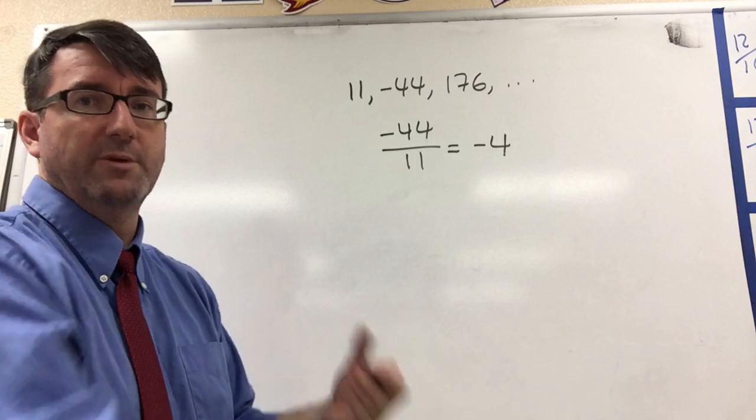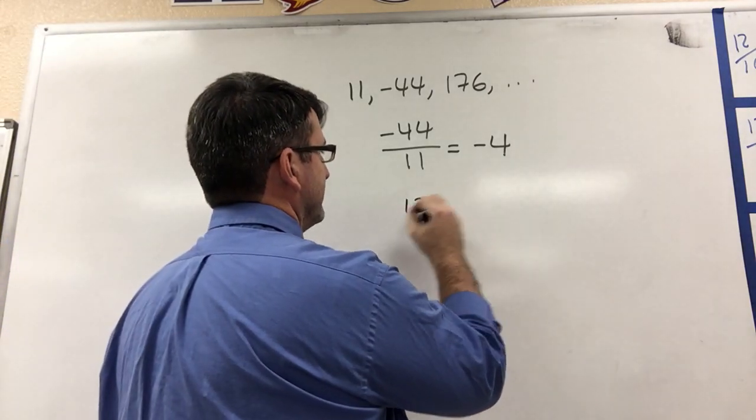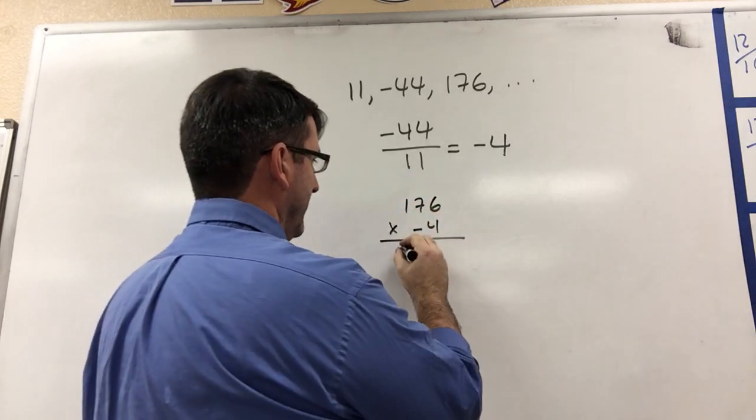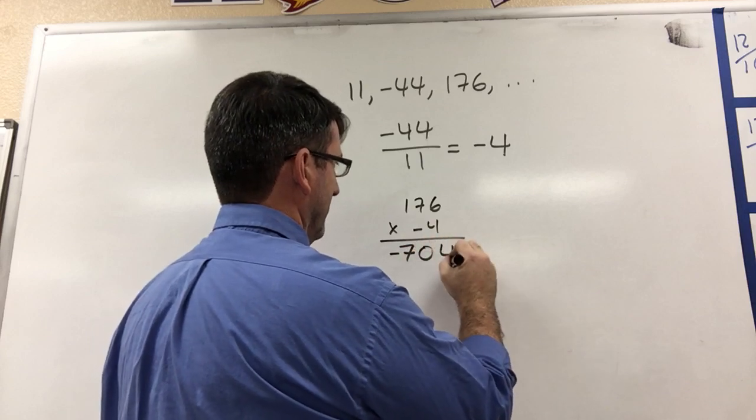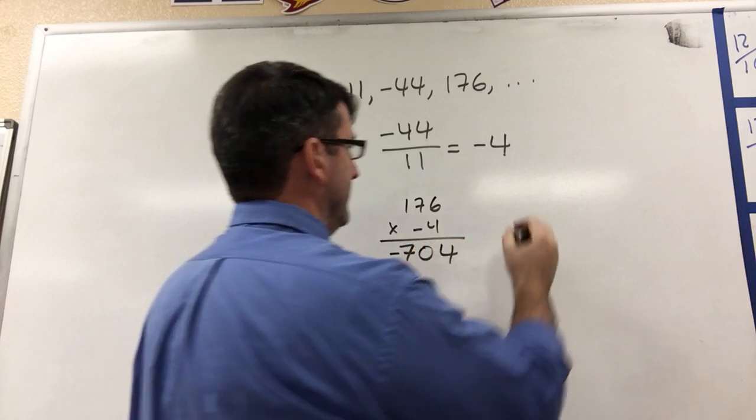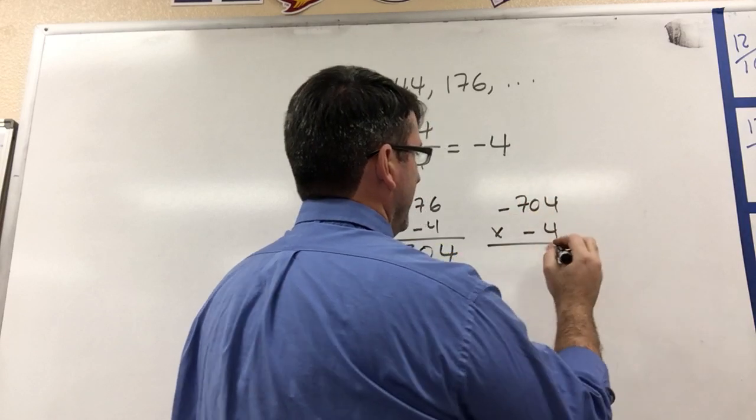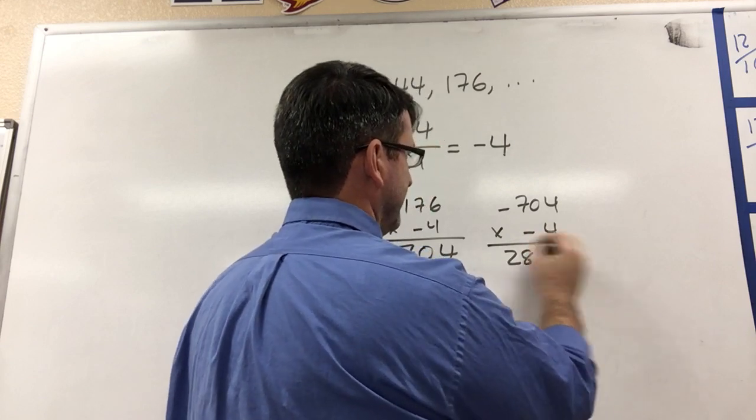So the next two terms in this sequence we can find by continuing to multiply by negative 4. So 176 times negative 4 is going to be negative 704, and then negative 704 times negative 4 is going to be positive 2816.